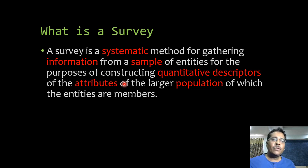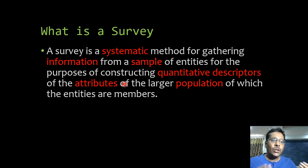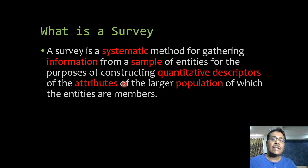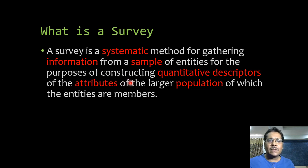We want some information from a sample of a population so that we can extrapolate from that sample to the entire population. We are basically studying the characteristics of a population by asking them questions, and based on that we extrapolate to the entire population — it could be about association, correlation, or simple description of the population.